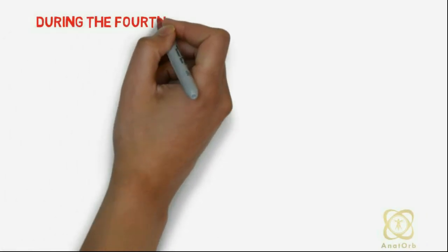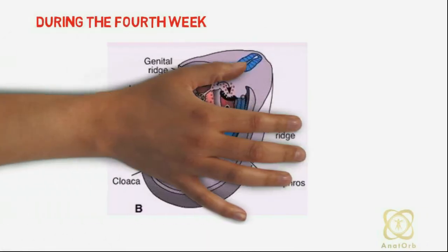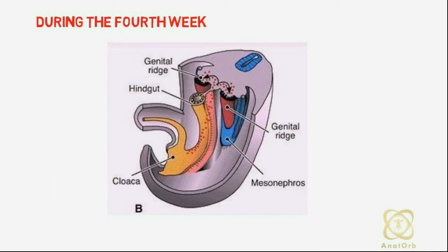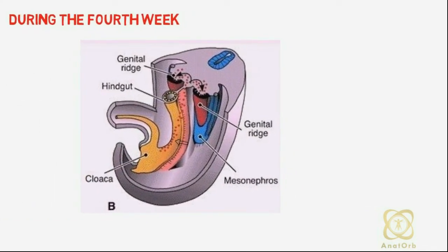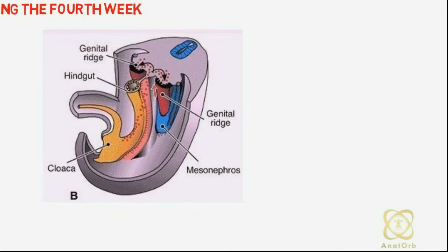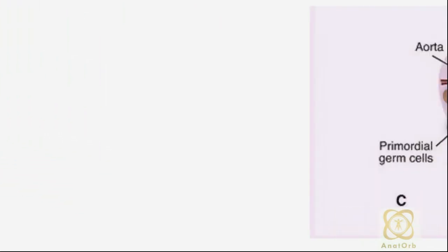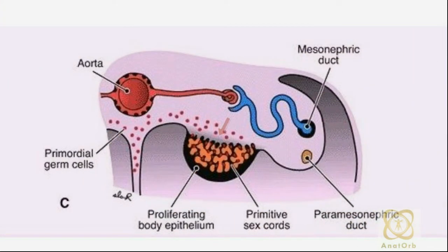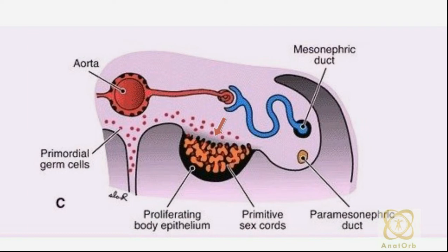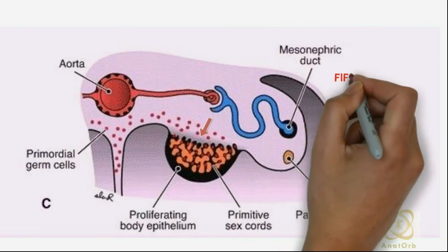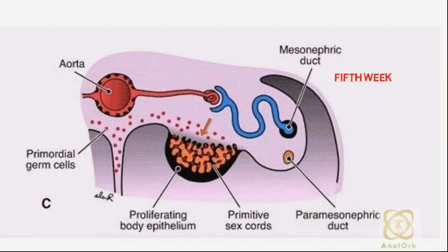During the fourth week, these cells begin to migrate from the yolk sac by amoeboid movement along the dorsal mesentery of the hindgut towards the developing gonads, where they arrive at the end of the fifth week.